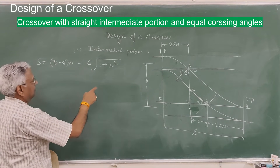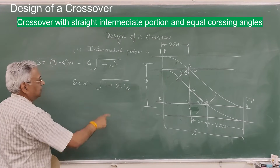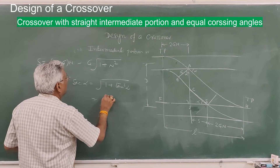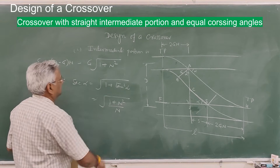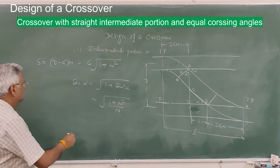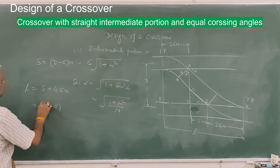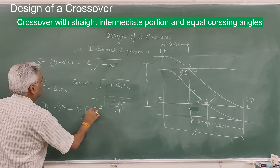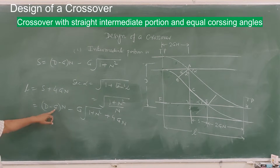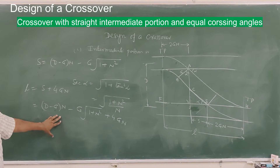This simplification works because sec alpha equals square root of (1 plus tan squared alpha), and tan alpha equals 1 over cot alpha, so tan alpha = 1/N. Therefore sec alpha = square root of (1 plus N squared) over N. Substituting gives the value of S. The overall length of the crossover L equals S plus 4GN, which works out to (D minus G) into N minus G square root of (1 plus N squared) plus 4GN. Knowing N, G, and D, you can calculate S and L.